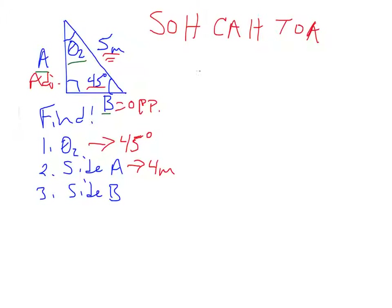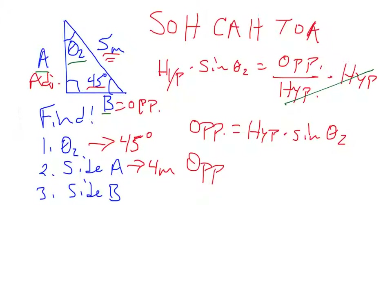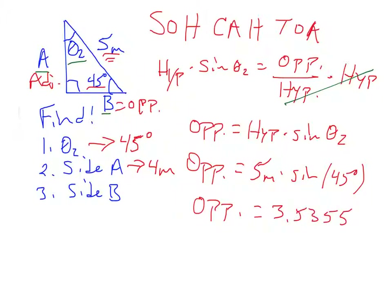The sine of theta 2 equals the opposite side divided by the hypotenuse. Multiplying both sides by the hypotenuse gives: opposite equals hypotenuse times sine of theta 2. Plugging in: opposite equals 5 times sine of 45 degrees, which gives 3.5355..., and with one significant digit that becomes 4 meters.